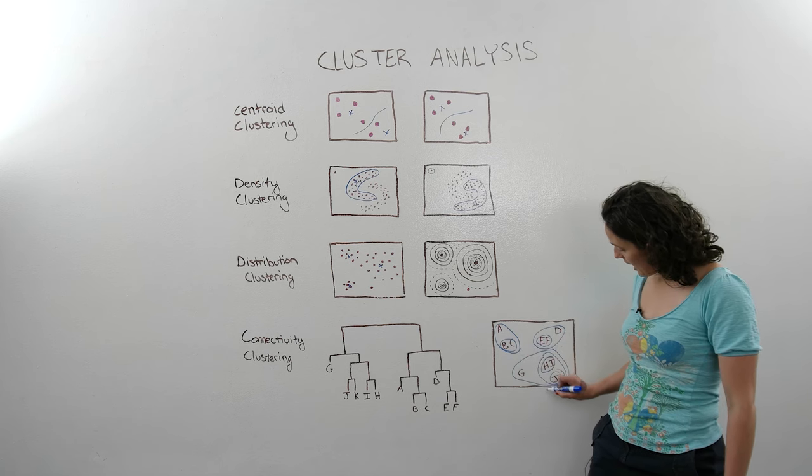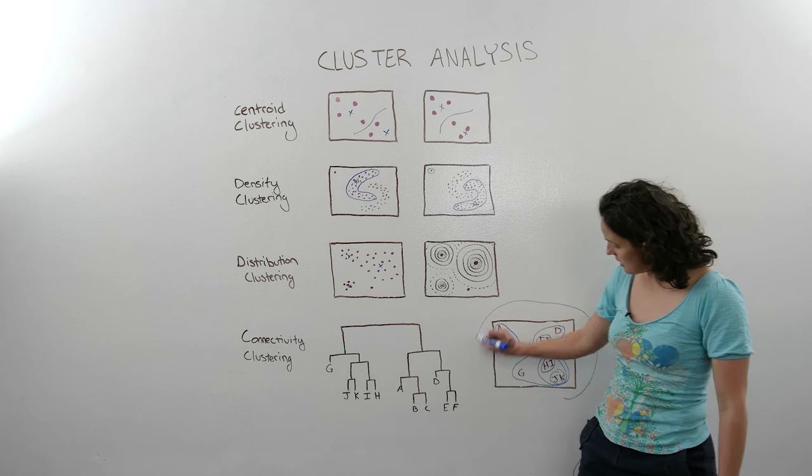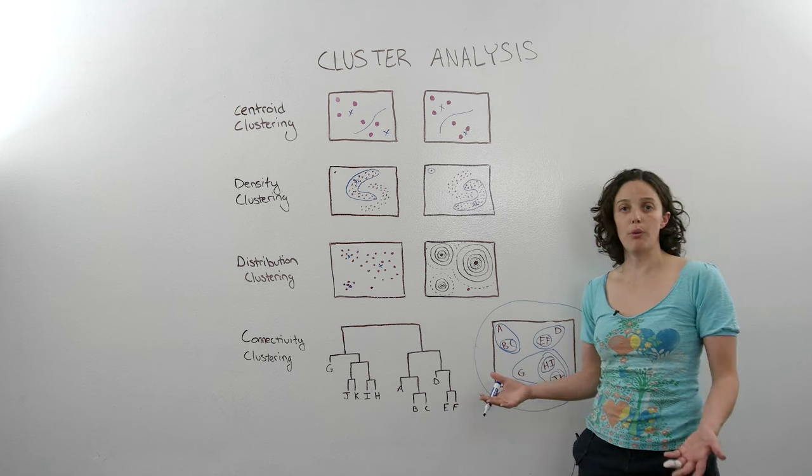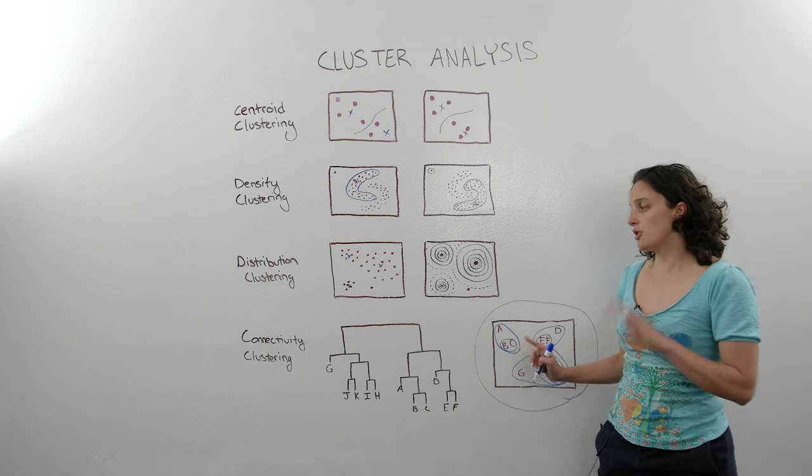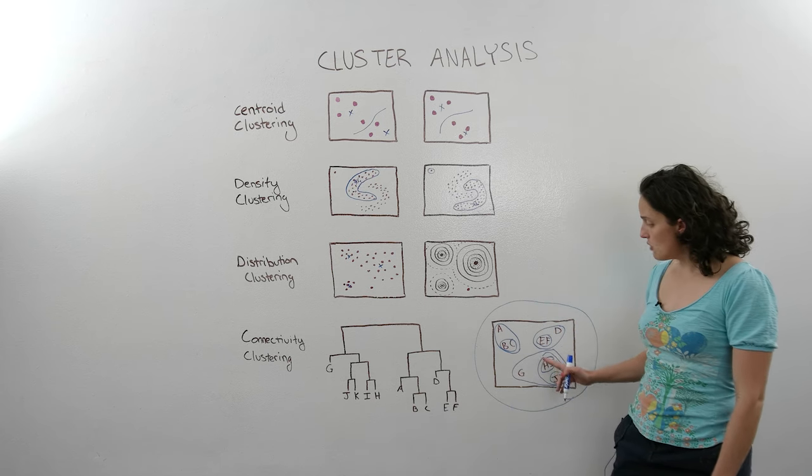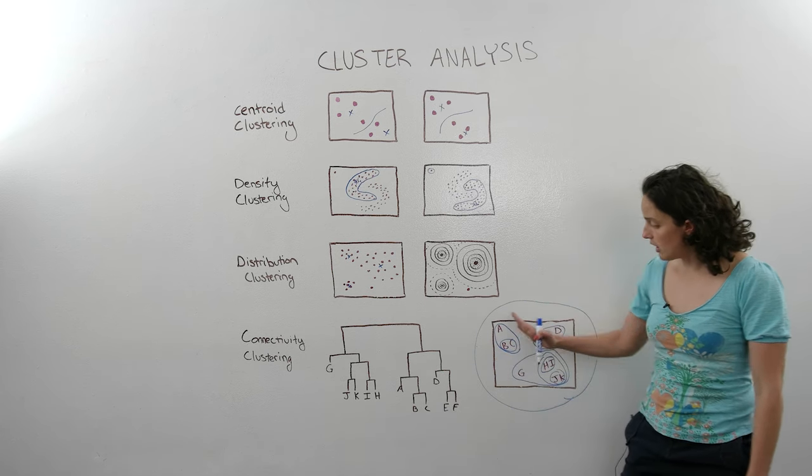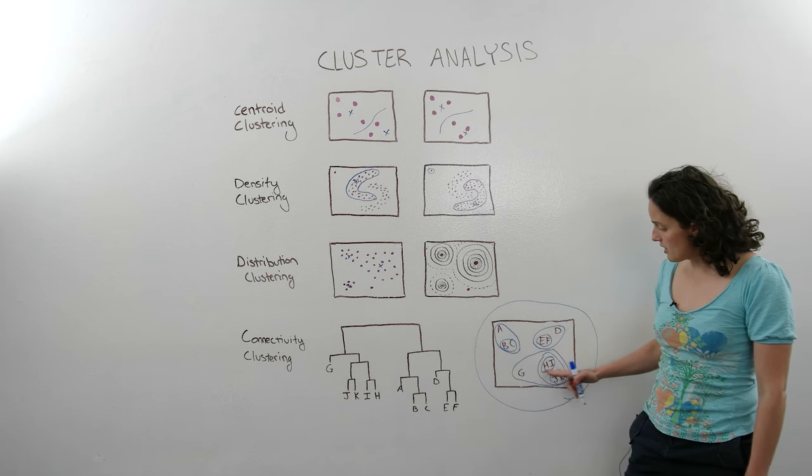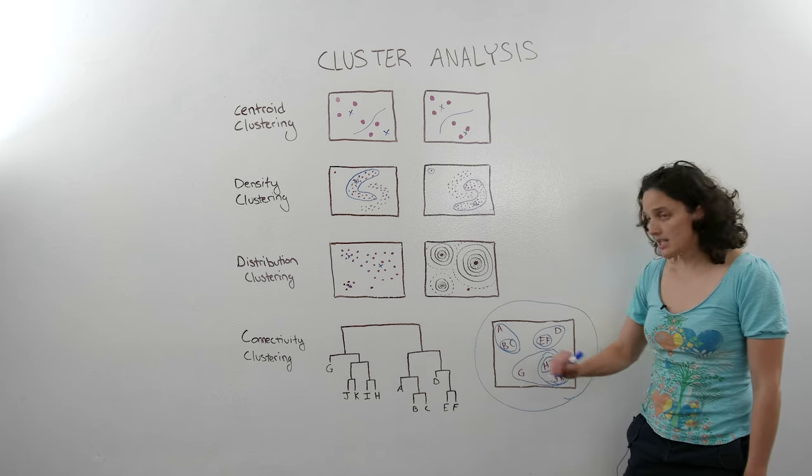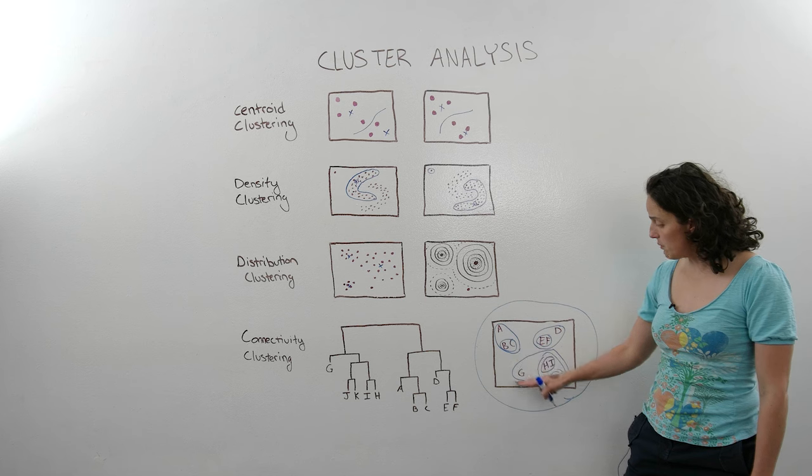And then eventually, I could put a circle around this whole thing, because they all come to a point where everybody's part of one group. So the big trick on this one is determining where do you cut it off. How do you know how many clusters you want? It comes down to how many clusters you want again. So do you want to leave G just as an outlier, or do you want to keep it as part of the group?